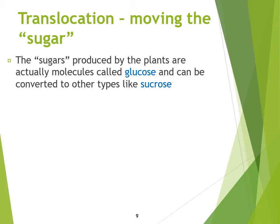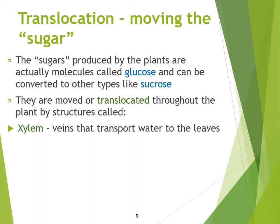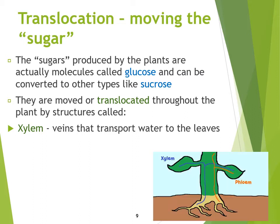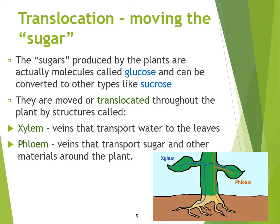The sugars produced by the plants are molecules we call glucose. We can also convert them into other types like sucrose, so there are many processes involved. The plants need to move these sugars to other parts of their body — other leaves and stems — because they need the energy or food to survive. We call that movement translocation. They can move them via water transport through the xylem and also through the phloem tubes.